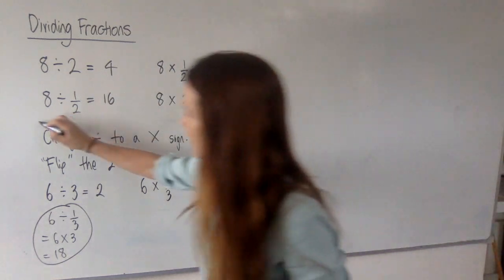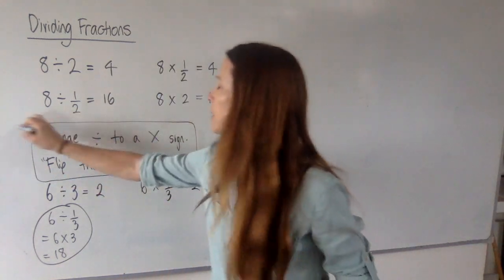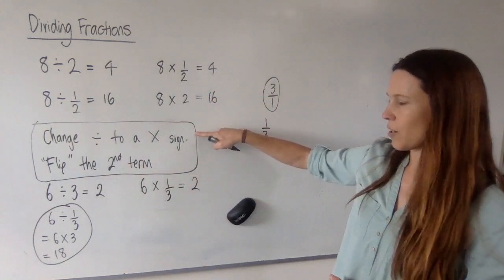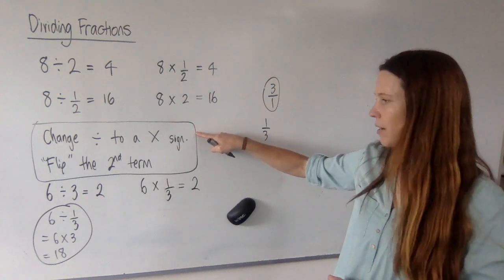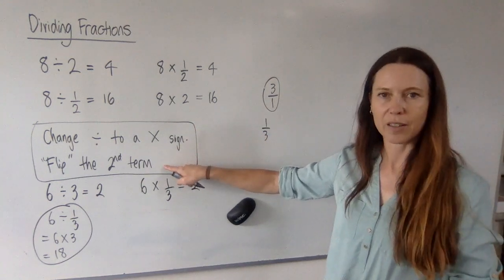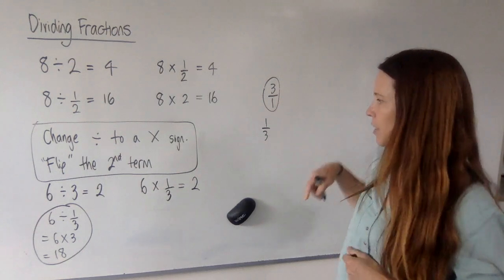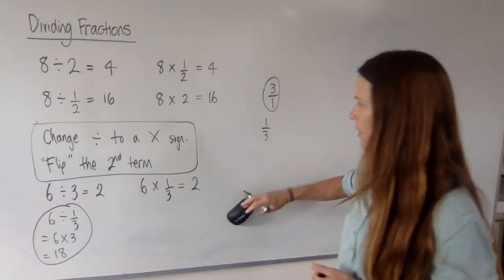Now we can do, we'll need to write this down. This is our take-home method, change the division to a multiplication sign, flip the second term. And if it's got nothing on the bottom, give it a 1. Okay, you might want to write that down as well.